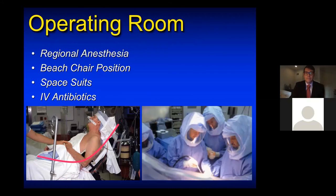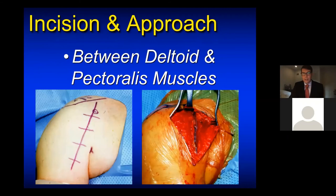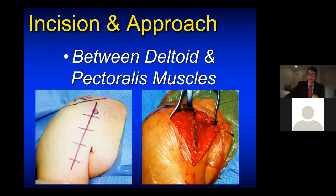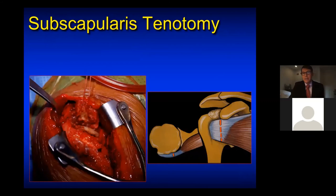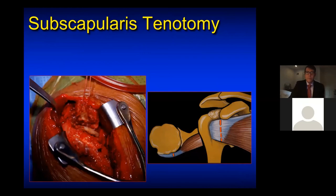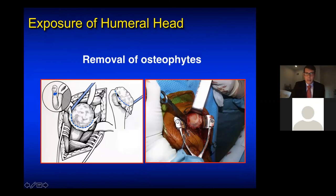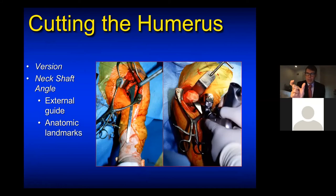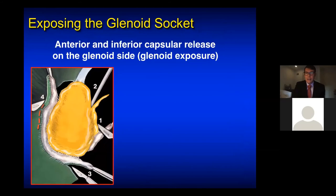During the procedure itself, we work in the anterior interval between the deltoid on the side of the shoulder and the pectoralis, pulling each to the side to gain access to the shoulder. We then go through the tendon in the front — incising, peeling, or releasing from bone — to open the door into the shoulder joint. We remove osteophytes, or the bone spurs seen on x-ray, to identify the anatomic neck where the head meets the shaft. We then make a cut with a saw to access the socket and perform an anatomic reconstruction with precise instrumentation.